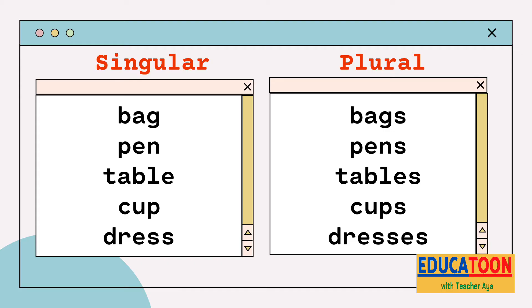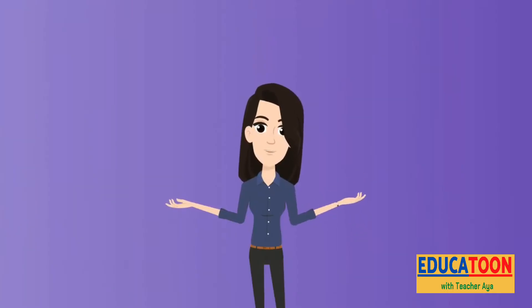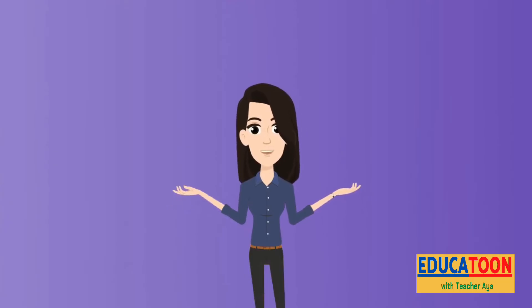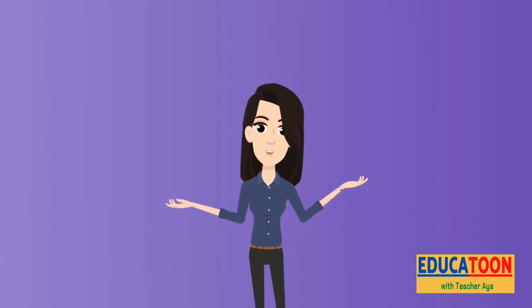Some other examples of count nouns are bag — in its plural form, bags; pen, pens; table, tables; cup, cups; dress, dresses. Can you think of some other count nouns? Go ahead, type in your answers in the comment box below.